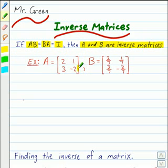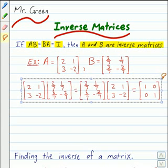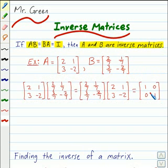For example, let's say you have these two matrices for A and B. The product of A times B is equal to the product of B times A, which equals the identity matrix 1, 0, 0, 1. So we can say that A and B are inverse matrices.